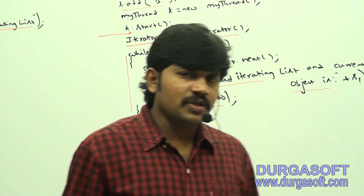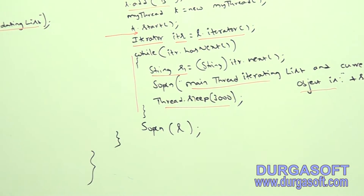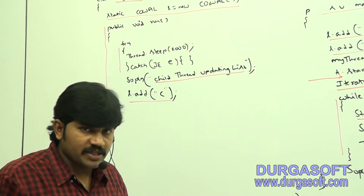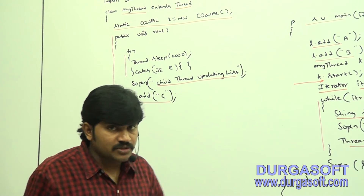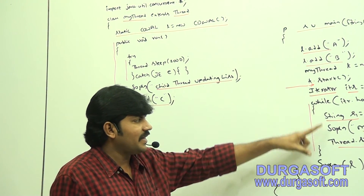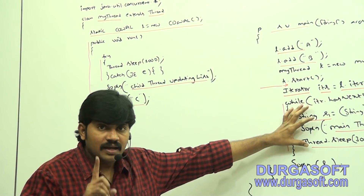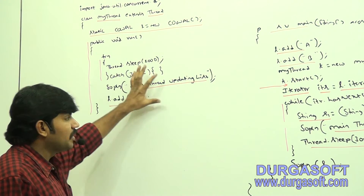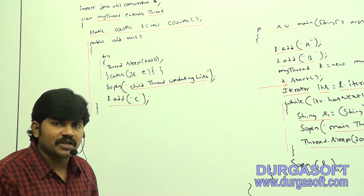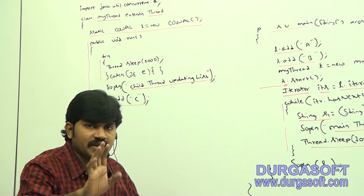Clear? That's simple. Now, if I replace CopyOnWriteArrayList with a normal ArrayList, what will happen? While one thread is iterating a normal ArrayList object, the other threads are not allowed to perform any modification.